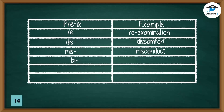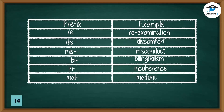Noun-forming prefixes and suffixes. Prefix 'bi-' — example: bilingualism. Prefix 'in-' — example: incoherence. Prefix 'mal-' — example: malfunction.